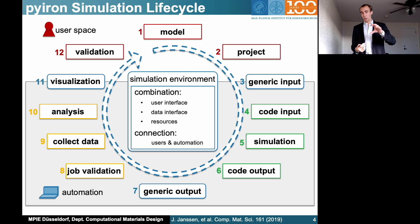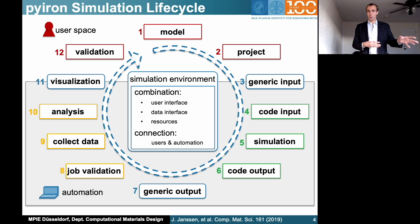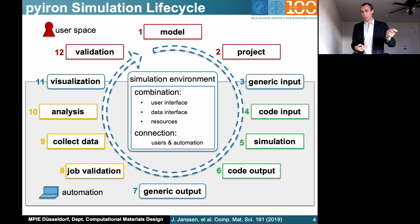In the simulation, Pyron takes over and converts the generic input to the specific input files required by the simulation codes, executing the simulation — most likely not on your local computer but on a high performance computer — and then returning the output, again converting it to the generic format. By using the generic format for both input and output, it's possible to really separate the submission of the calculation and the execution from the analysis. The same analysis can be applied to different simulation codes — validation of the job, collection of multiple calculations which belong together, and further analysis like fitting the energy-volume curve. Finally, the result is visualized so the user can validate it, update their model, and do another iteration.